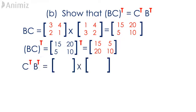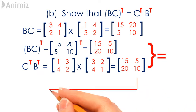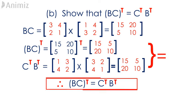Multiplying C transpose and B transpose requires us to first transpose matrix C and matrix B by interchanging the rows and columns respectively. Then proceed by multiplying the transpose of C, which is 1, 3, 4, 2, with the transpose of B, which is 3, 2, 4, 1. The outcome obtained is a 2 by 2 matrix containing the elements 15, 5, 20, 10, which is equivalent to the outcome for the transpose of BC. With that, we have shown that the transpose of BC is equal to C transpose times B transpose.